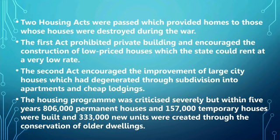The second act encouraged the improvement of large city houses which had degenerated through subdivision into apartments and cheap lodgings. Though the Housing Acts were initially criticized by opposition parties, within 5 years nearly 8,60,000 permanent houses were built, 1,50,000 temporary houses were built for the poor, and 3,33,000 new units were created through conservation of older dwellings. This almost solved the housing problem in England.